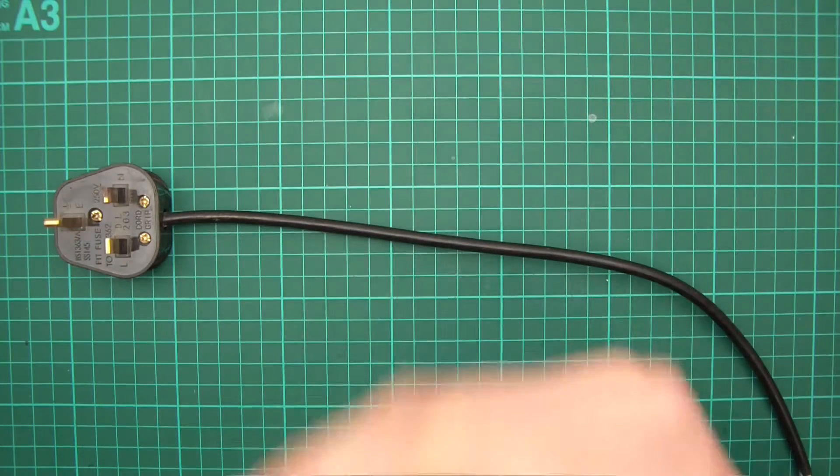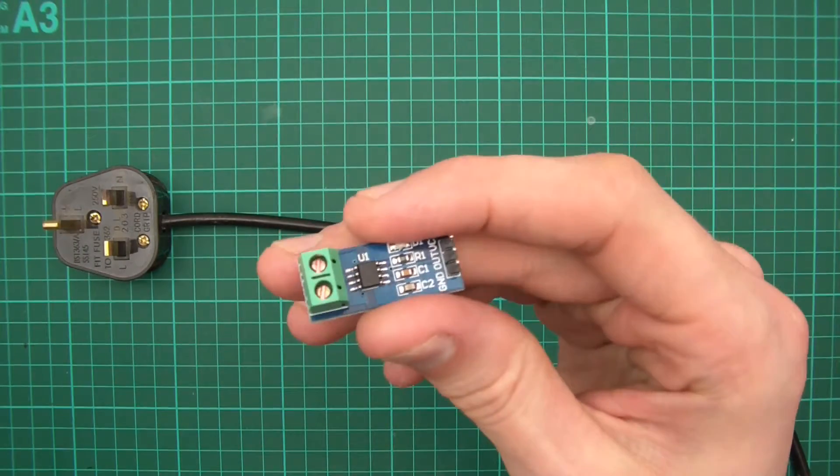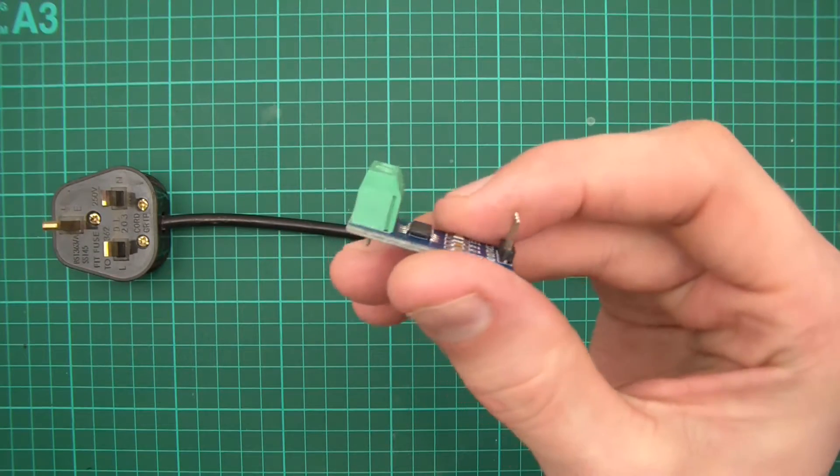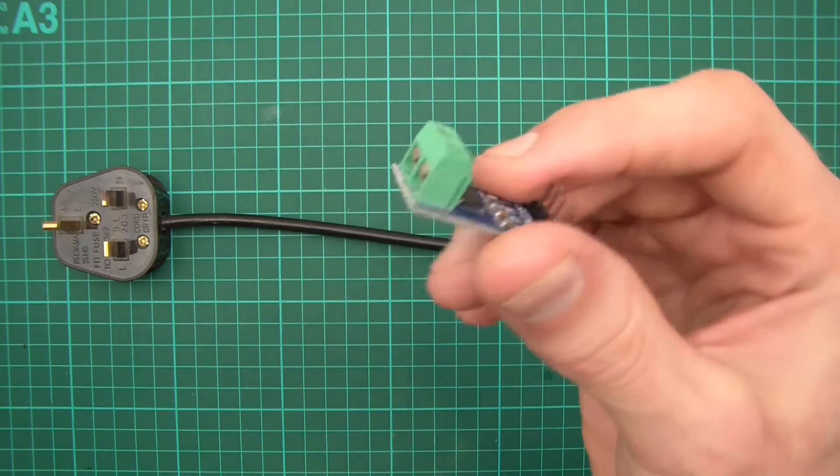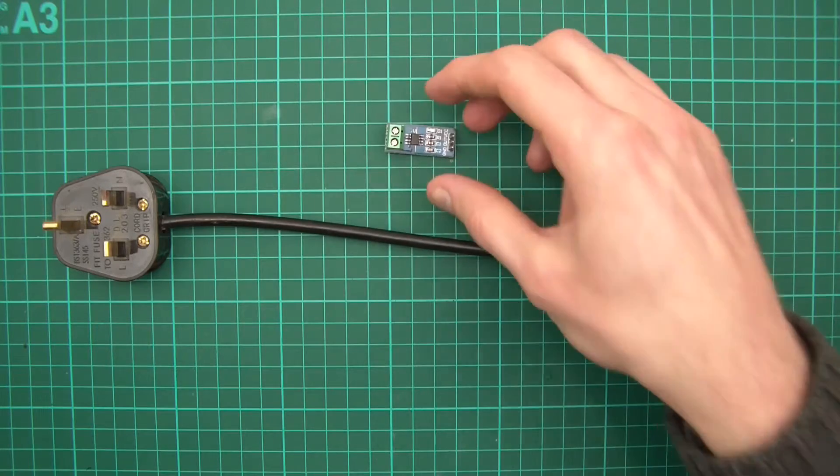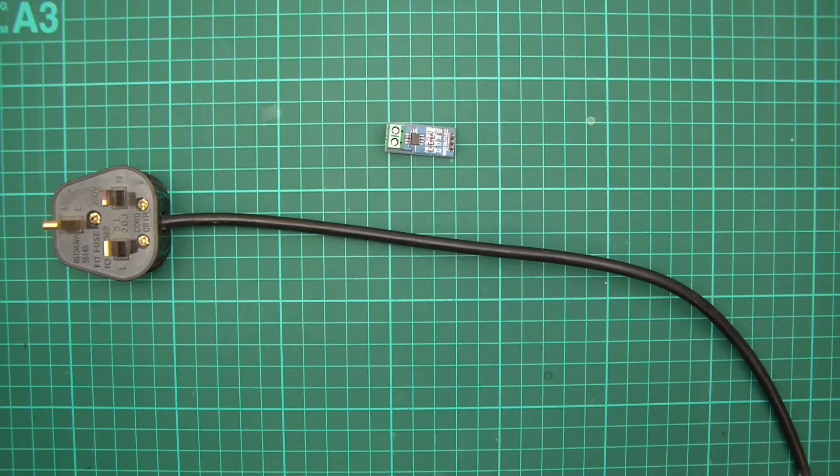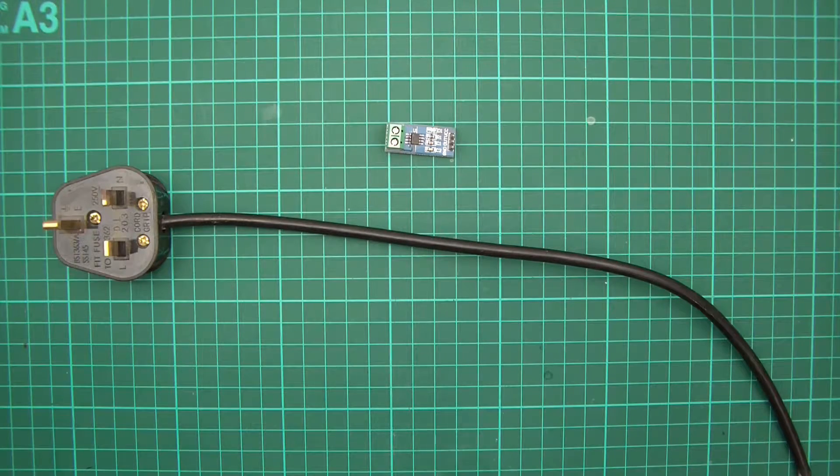Okay, welcome back. In the previous video we discussed this ACS 712 current sensor, a hall effect sensor, and I said that you could measure AC current with it. I went through the theory, and here we are now. In this part of the video I'm going to show you the wire up.